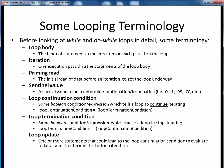A loop continuation condition is simply the Boolean condition or expression within parentheses which tells us whether or not to perform another iteration of our loop. As long as it evaluates to true, we keep on looping. A loop termination condition, by contrast, is simply some Boolean condition or expression which describes the conditions under which our loop should stop iterating.